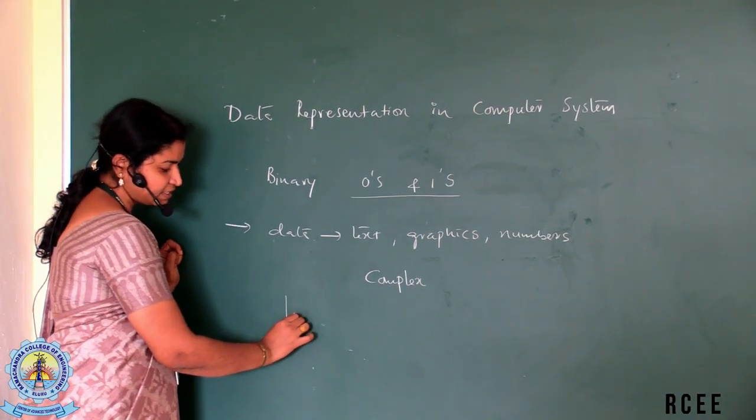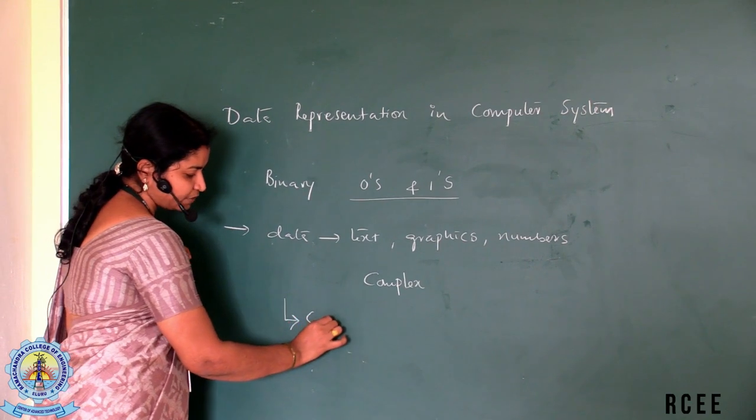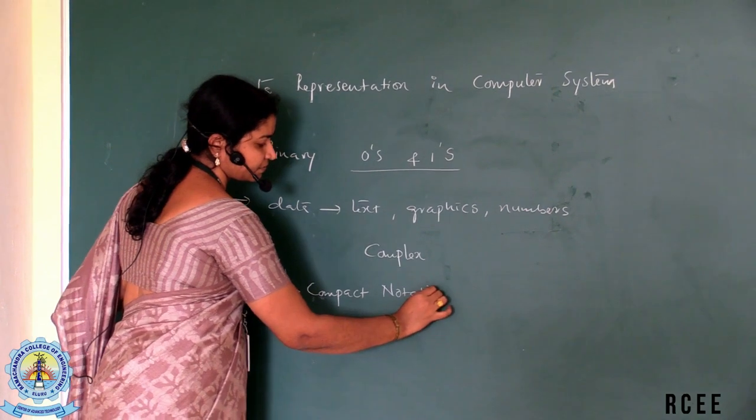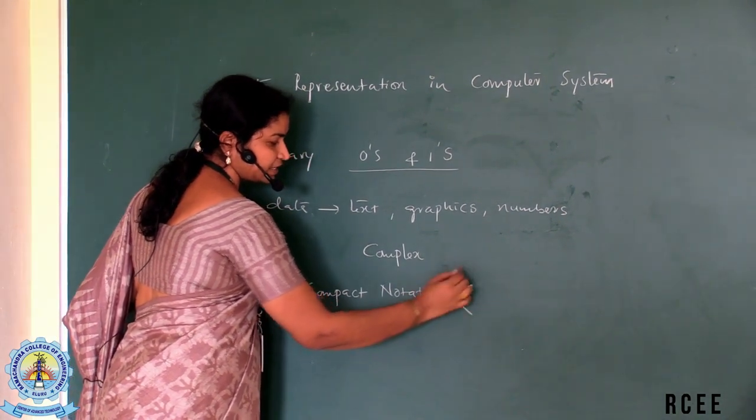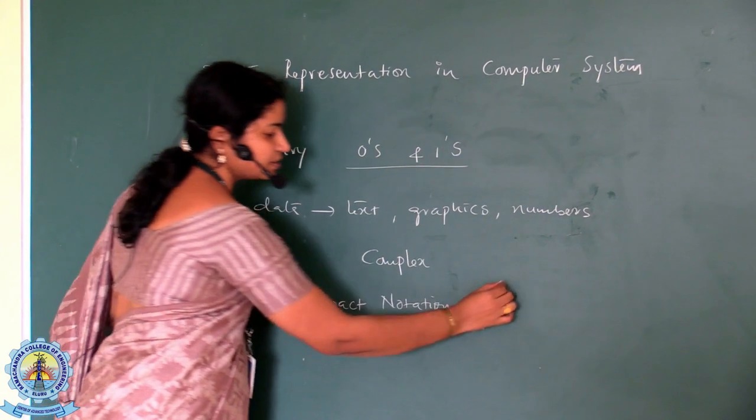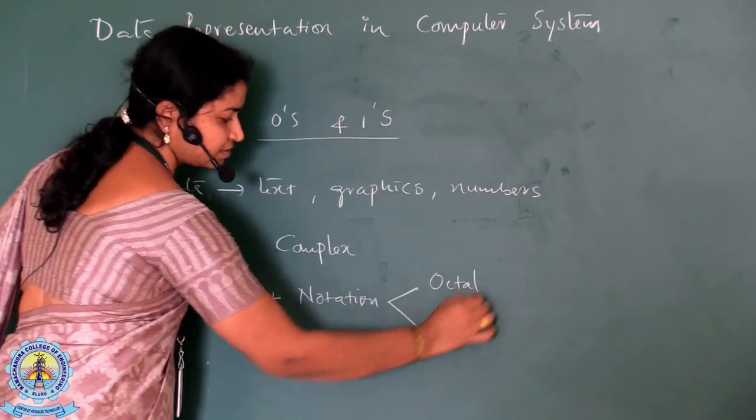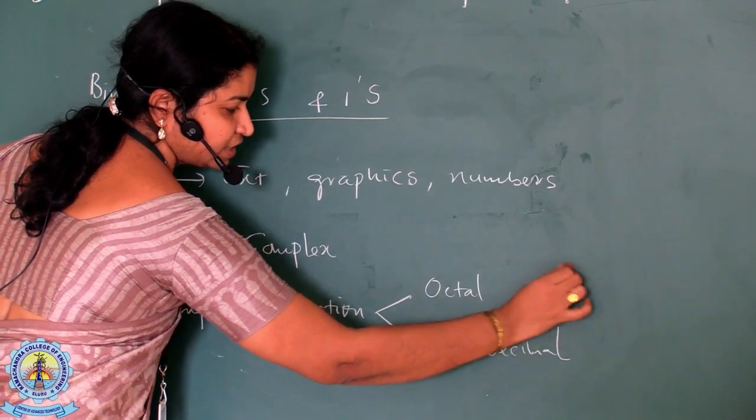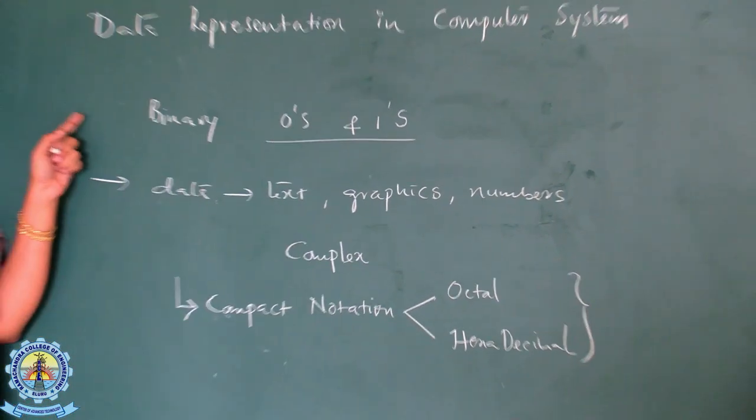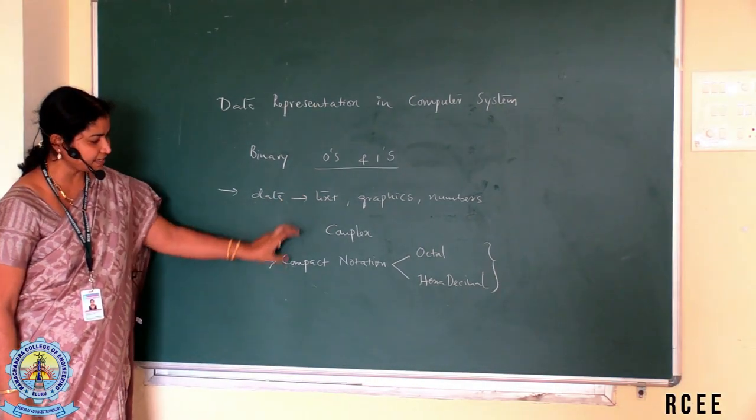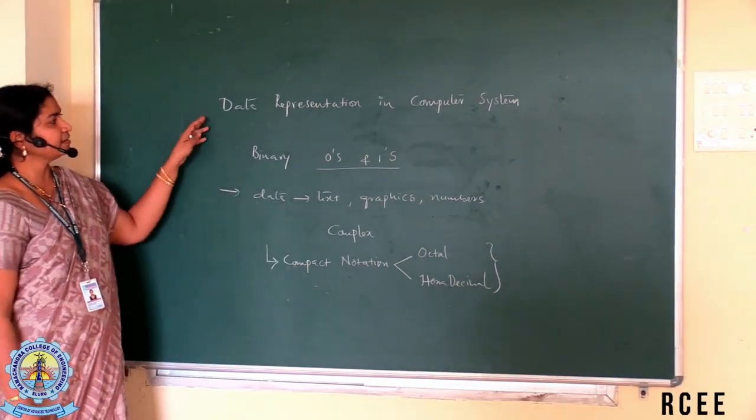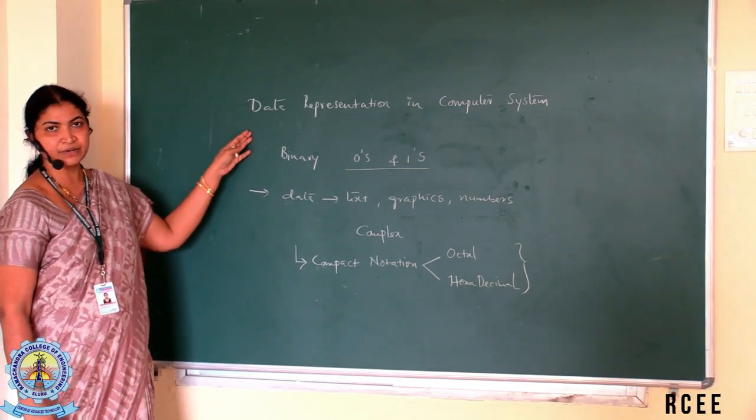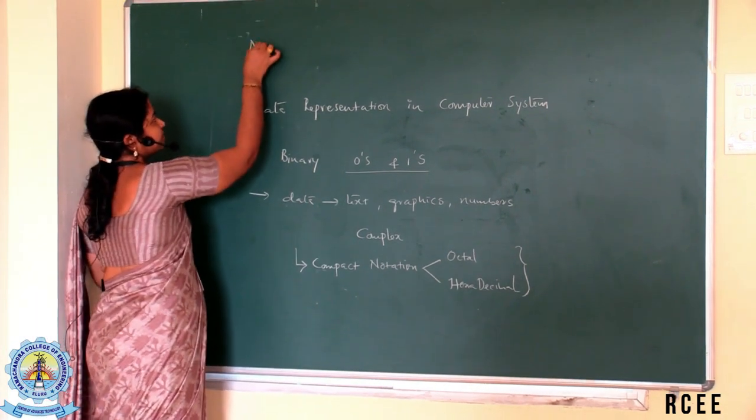We have to convert in a compact notation which can be achieved with other number systems called octal or hexadecimal along with binary. These two number systems are being introduced to represent the data in a compact notation. Before discussing how the data is exactly represented in a computer system, we first will look at the number system.